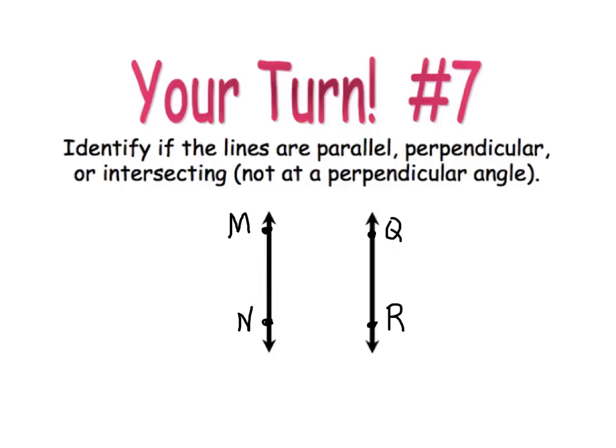Okay. We're going back to our little quiz that you're doing there. So now you're up to number seven. This time you're going to say whether they are parallel, perpendicular, or intersecting. And by intersecting, I mean that they are crossing, but not at a right angle, which would mean it was a perpendicular line.